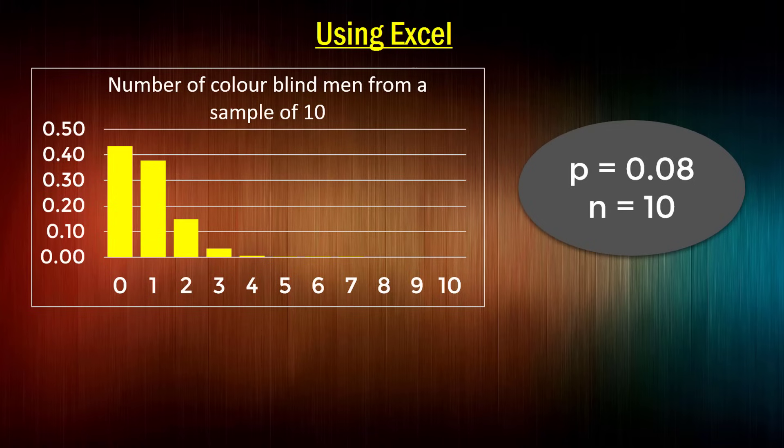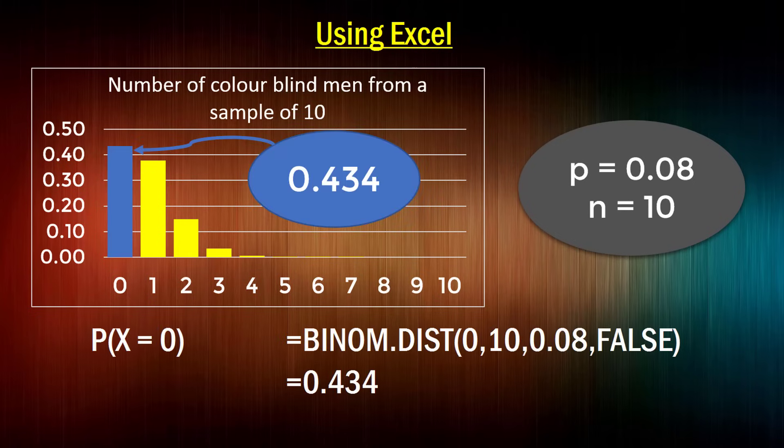Now you might be thinking, look, is there a simple way of doing this? And yes, there is. Using Excel, you can take advantage of the function, which is the binom.dist function. So if I'm trying to find the probability of x being 0, I can use equals binom.dist. And what that'll do is provide for me the height or the probability of each discrete outcome from the binomial distribution. So the probability of getting 0 men out of 10 can be found by putting in that first argument being 0, which is our value that we're interested in. The next argument of this function that's required by Excel is the total number in our sample, which in this case is 10. The third argument requires the probability of success, which is 0.08.